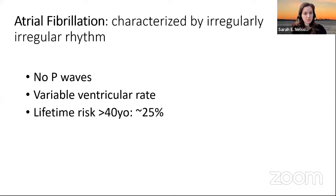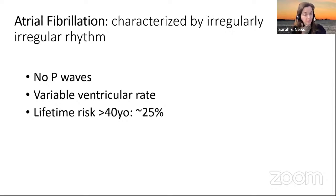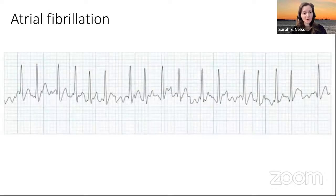Speaking about heart rhythms we see commonly in the ICU and how to think about them: AFib, as I'm sure we've heard many times, is characterized by an irregular rhythm — no obvious P waves and a variable ventricular rate. As we get older, unfortunately, that rate increases, which is a non-modifiable risk factor.